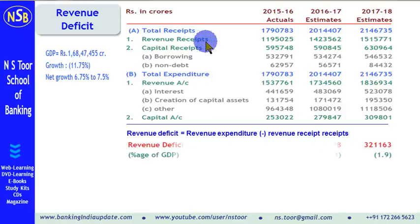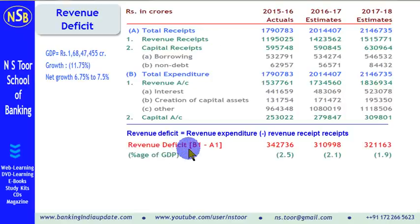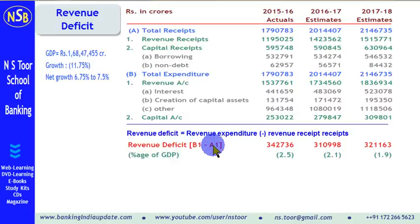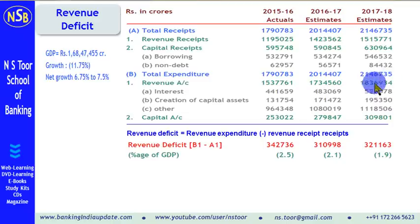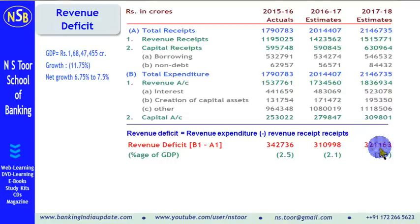Here we go for our calculation. Revenue deficit is equal to B1, that is revenue expenditure, minus A1, that is revenue receipt. This is revenue expenditure, this is revenue receipt, and the gap is 321,163 crore.